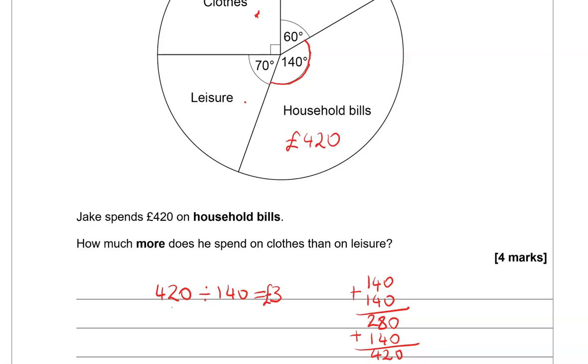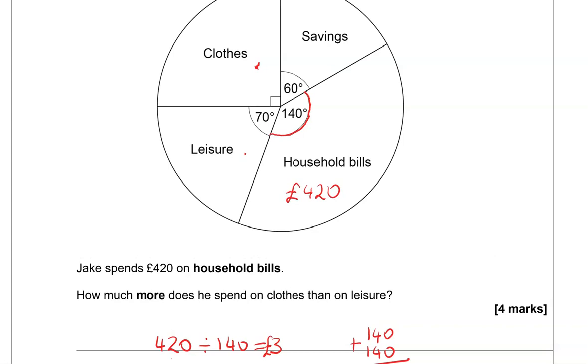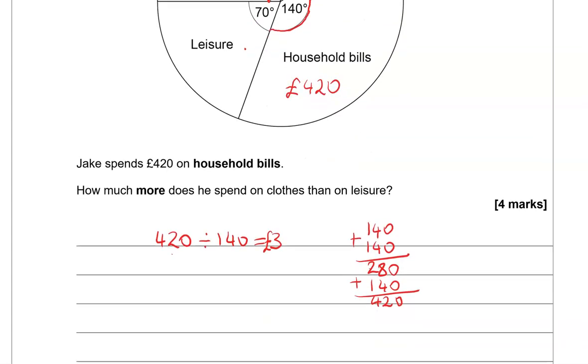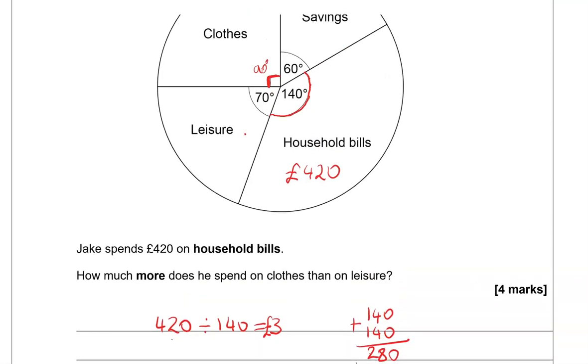Now that can help us compare the amounts spent on clothes and leisure. So clothes, we've got this right angle here, which tells us it's 90 degrees. So what we're going to do is 90 times 3 or 3 times 90. 3 times 0 is 0, 3 times 9 is 27. So 270 pounds. That is for clothes.